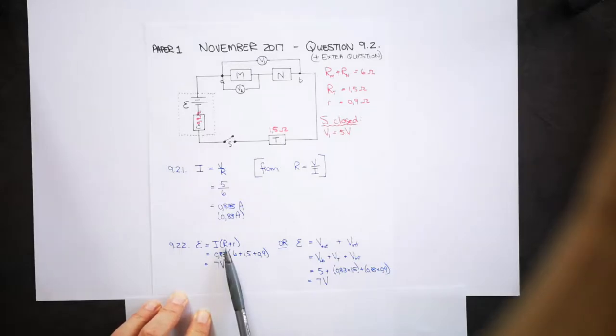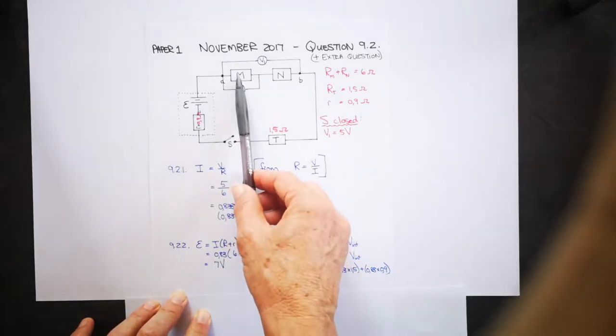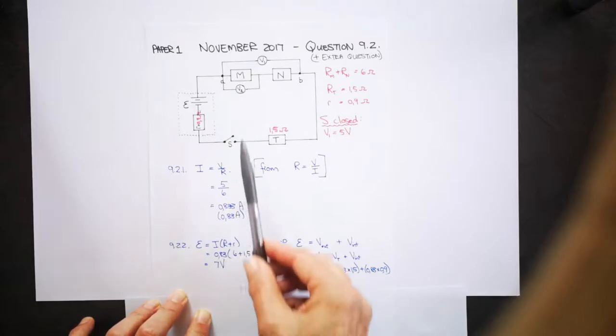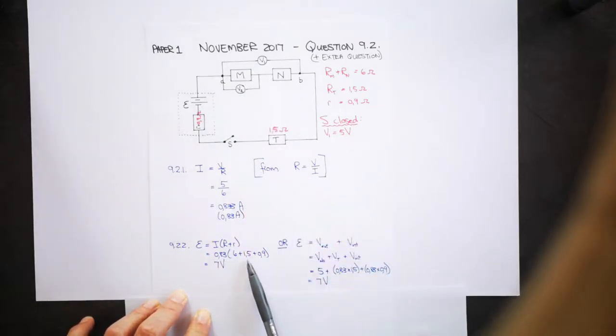R is your total resistance in your circuit. It is M's resistance plus N plus T. That's the external resistance. And this is your internal resistance. So it's 6 for M and N together. T's resistance is 1.5 and 0.9 is your internal resistance.